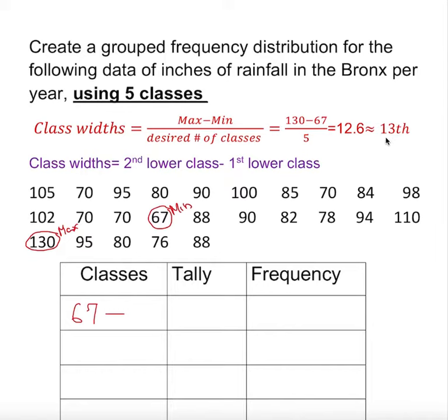If it comes up evenly at 12, you still go to the next whole number. If it's 11, you go to 12. If it's 11.2, you go to 12. This is 12.6, so we go to 13.